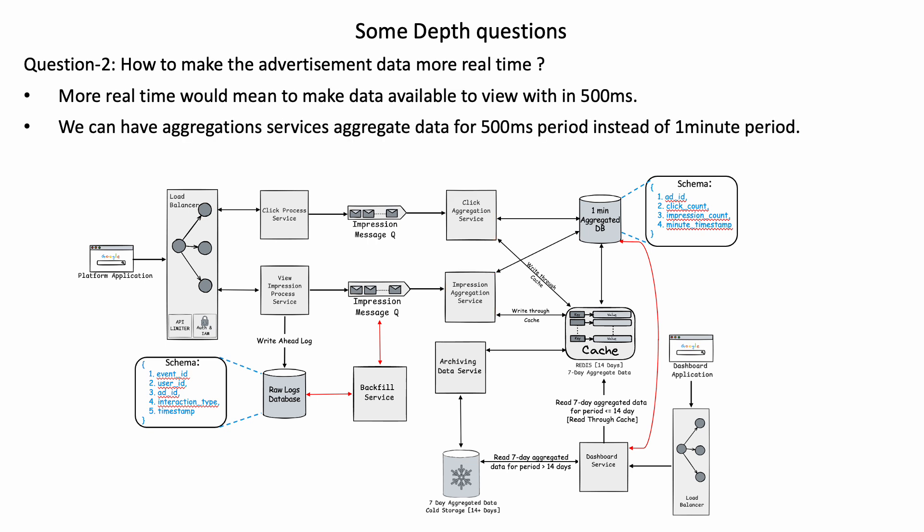How do we make the advertisement data more real-time? More real-time means making data available within 500 milliseconds. We can have the aggregation services aggregate data for a 5-millisecond period instead of a 1-minute period.